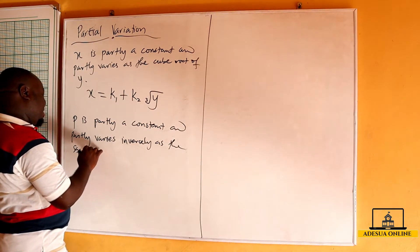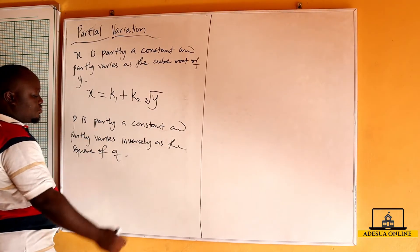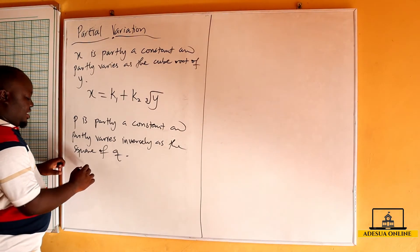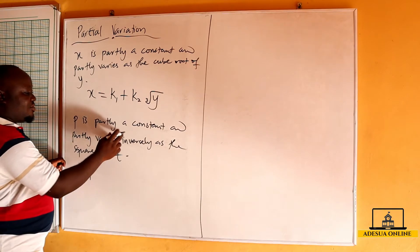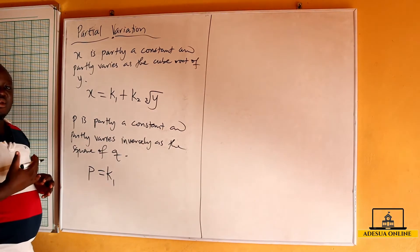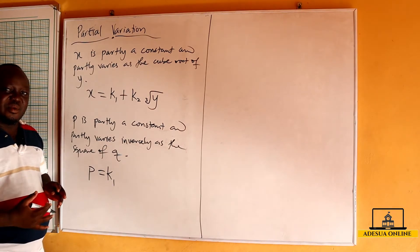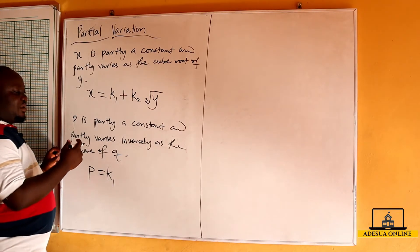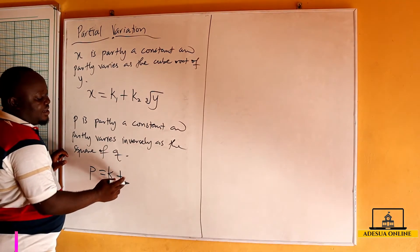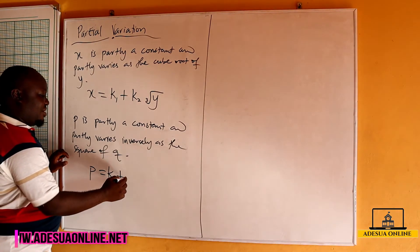As the square of q. So if we have this example too, we are saying p is partly a constant, so p is equal to k1. The constant is always there, the k1 and the k2. So p is partly a constant and partly varies, so we bring our addition sign, partly varies inversely.